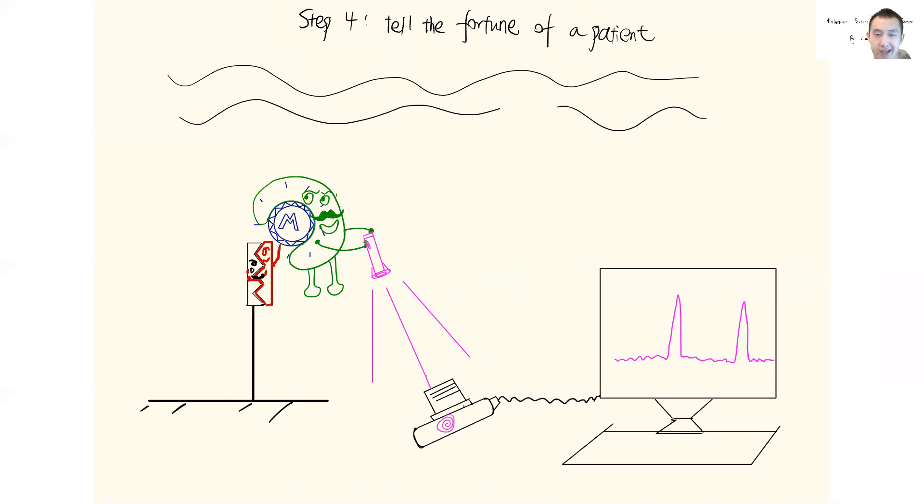The pattern of that signal indicates two important pieces of information. First, whether or not Mr. Red with M marker exists inside the blood, and also the level of Mr. Red in the ocean of blood. The information altogether can help us determine whether or not this patient has cancer or the development process of cancer.